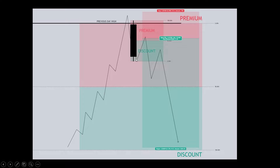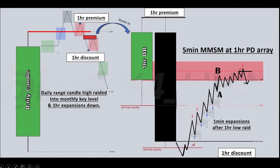You can see here there is a temporary low time frame discount area even within the high time frame premium. In this one-hour market maker sell model, after riding the previous day high, we can frame a five-minute market maker sell model in the heavily premium PDRs in this hourly dealing range, marked by these blue dots.